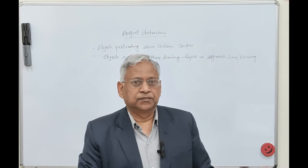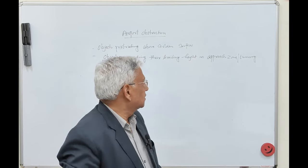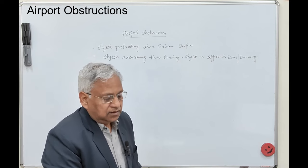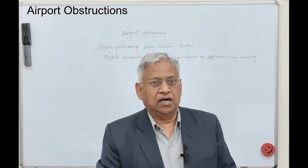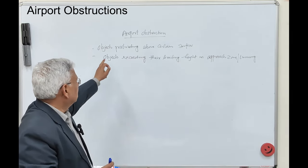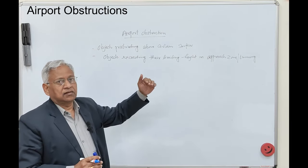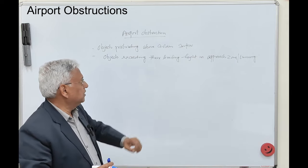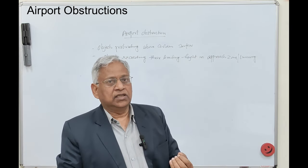Hello friends. Today in this session we will discuss airport obstructions. Obstructions to safe air navigation are broadly classified into two groups: one, the objects protruding above certain imaginary surfaces, and second, objects exceeding their limiting height in the approach zone or in the turning zone.